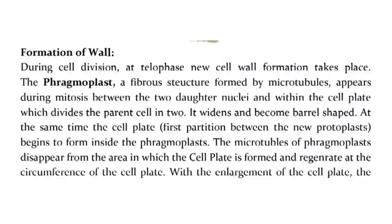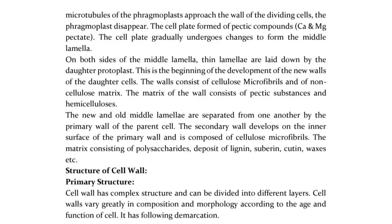The microtubules of the phragmoplast disappear from the area in which the cell plate is formed and regenerate at the circumference of the cell plate. With the enlargement of the cell plate, the microtubules of the phragmoplast approach the wall of the dividing cells, then the phragmoplast disappears. The cell plate forms the pectic compounds calcium or magnesium pectate. The cell plate gradually undergoes changes to form the middle lamella. On both sides of the middle lamella, thin lamellae are laid down by the daughter protoplasts, beginning the development of the new walls of the daughter cells. The walls consist of cellulose microfibrils and a non-cellulose matrix of pectic substances and hemicelluloses.